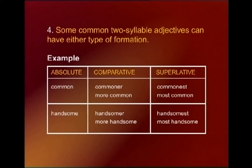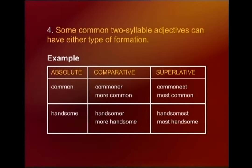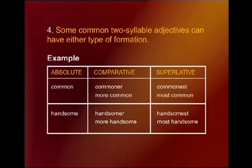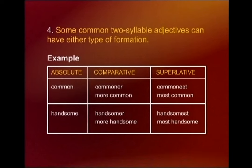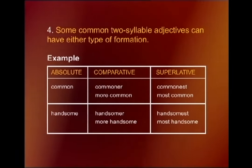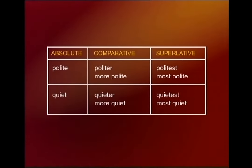There are some common two-syllable adjectives which can have either type of formation. For instance, the word 'common' — you can write 'commoner' and 'commonest,' and you can even have 'more common' or 'most common.' Notice that there are some words that take both types — you can add -er or -est and also use 'more' and 'most.'